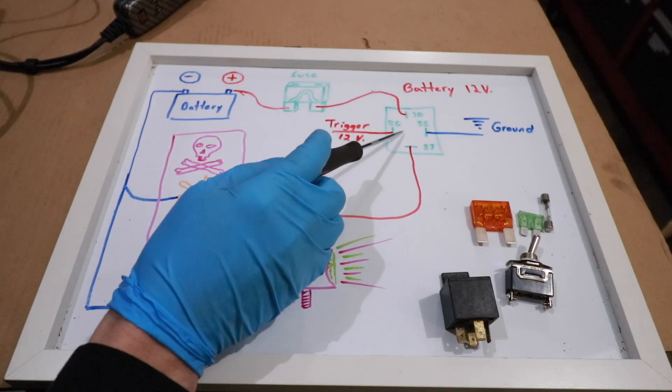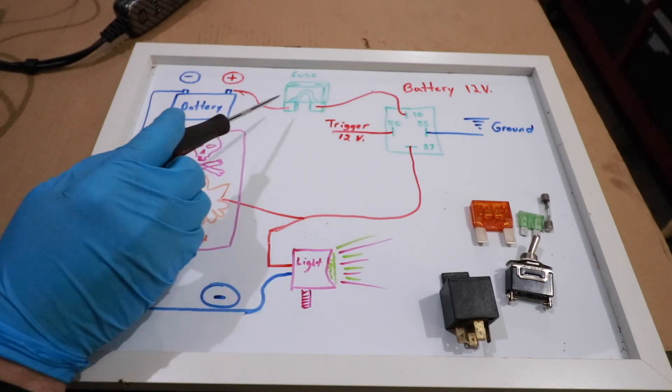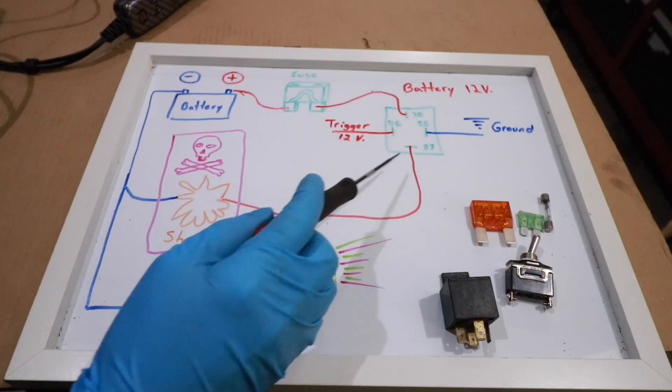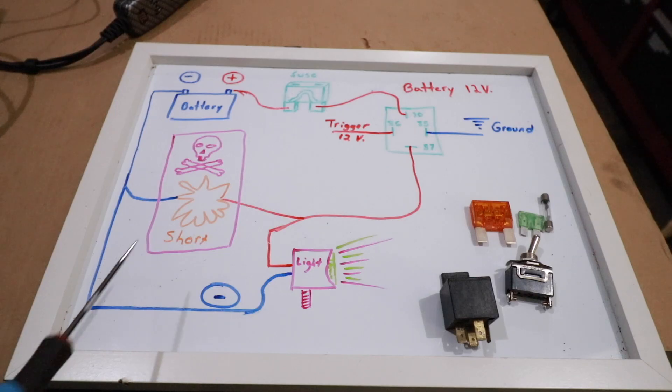On a relay you normally have at least four terminals. Terminal 30 is the incoming line from the battery, 85 is the ground, and 86 is your 12-volt trigger.